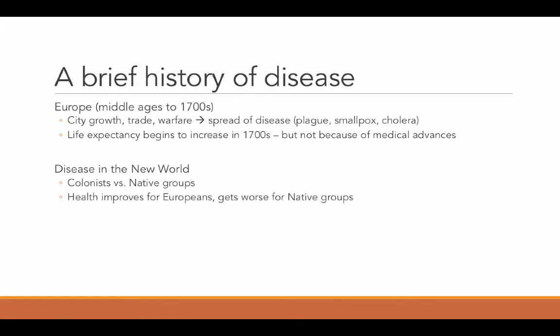Going from Europe to the Americas in the New World, you see an interesting transition. The health of people coming from Europe improved because they were moving to a country with relatively little disease, away from all the disease they had lived with in Europe. But they were also bringing disease with them. Their bodies had built up immunities to some extent, so they were carrying remnants of these diseases to the New World and infecting people who had no immunities. Europeans' health improved when they migrated, but for the native people who had not been exposed to those diseases, their health got much worse and many died.